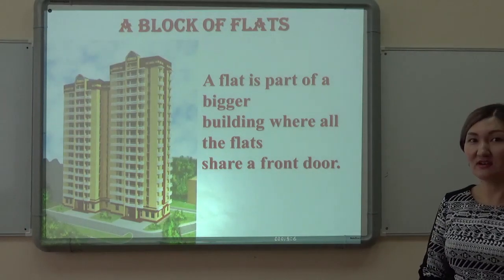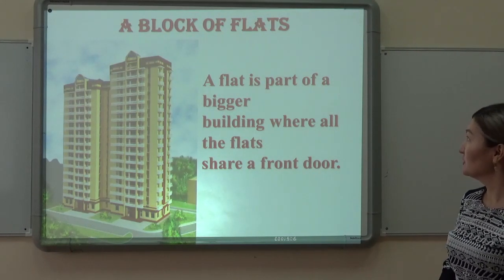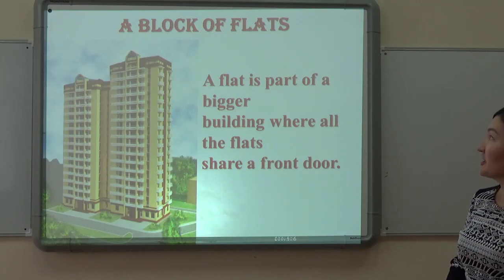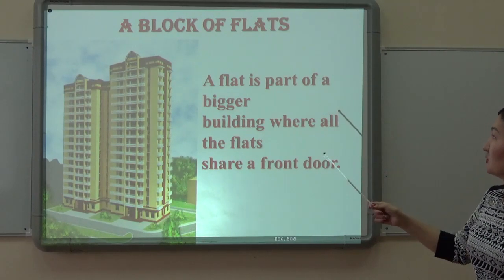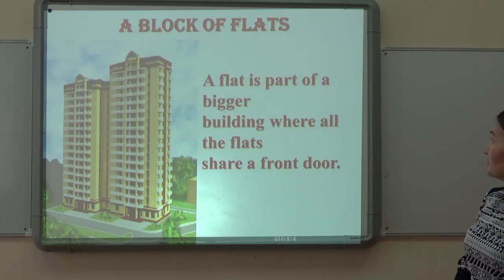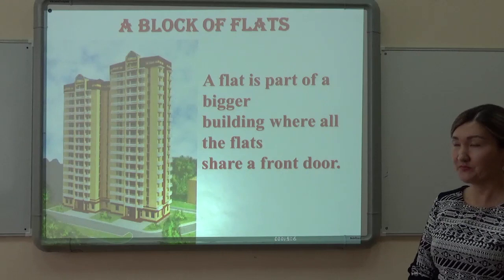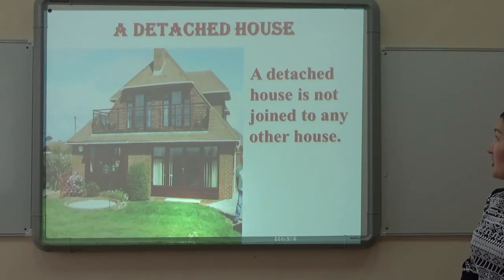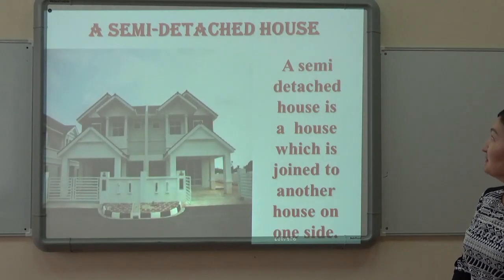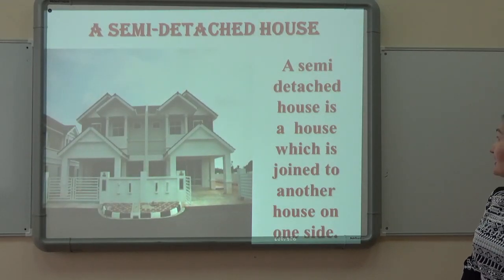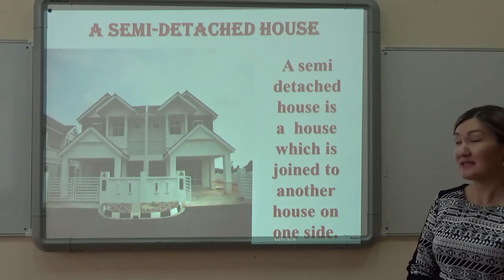First of all, I want you to learn vocabulary on this topic. A block of flats — a flat is a part of a bigger building where all the flats share a front door. A detached house — a detached house is not joined to any other houses. A semi-detached house — it is a house which is joined to another house on one side.